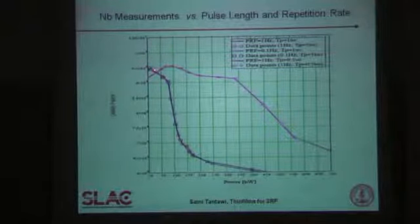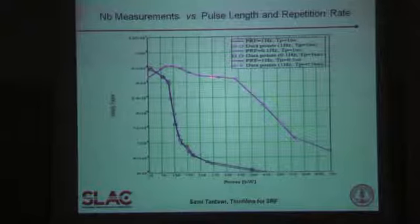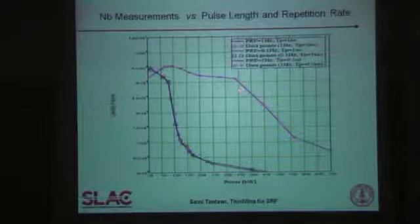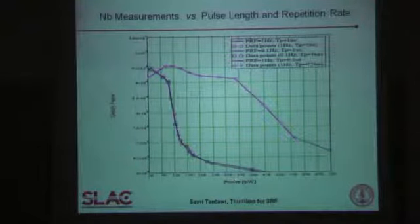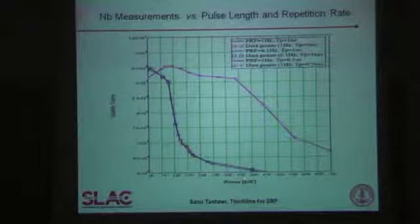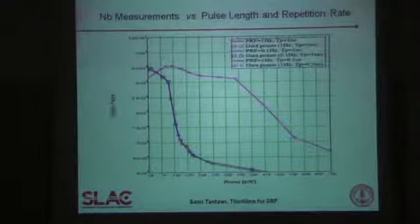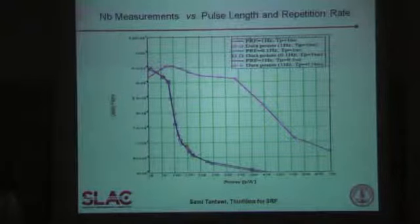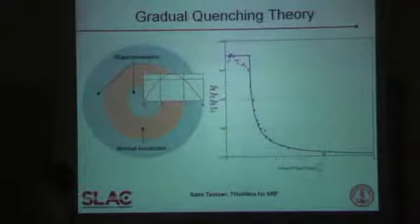Two things we found: the Q of niobium samples in particular has a slope to it, and then it quenches at a rather very low field. The power coming from the klystron can go up to about 10 megawatts, but we were quenching at only 370 kilowatts — corresponding to about 70 millitesla — and we couldn't understand why we were quenching at this level.